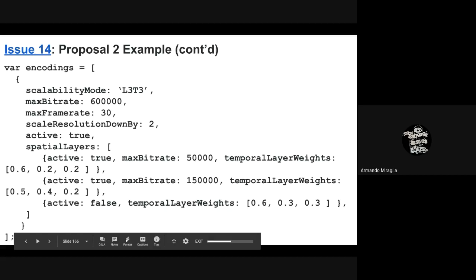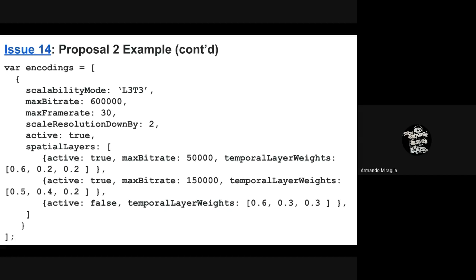The example shown for Proposal 2 uses L3T3 — three spatial layers, three temporal layers, no simulcast — one L3T3 stream. You would have general parameters at the top level and per-spatial-layer parameters. The temporal layer weights can be treated as a later extension of Proposal 1.